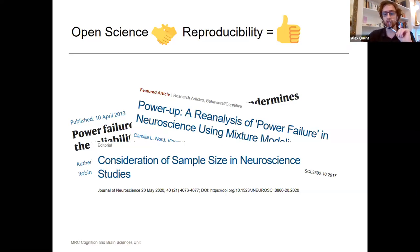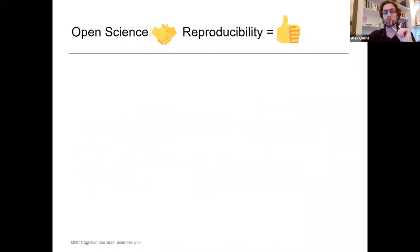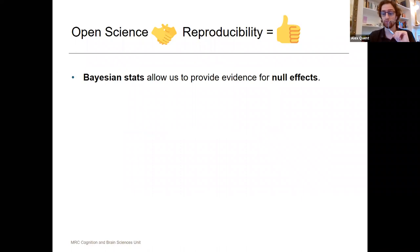And beyond that, we're also interested in not only showing effects but also showing null effects. That's actually where Bayesian statistics are really good because they allow us to provide quantifiable evidence for null effects.